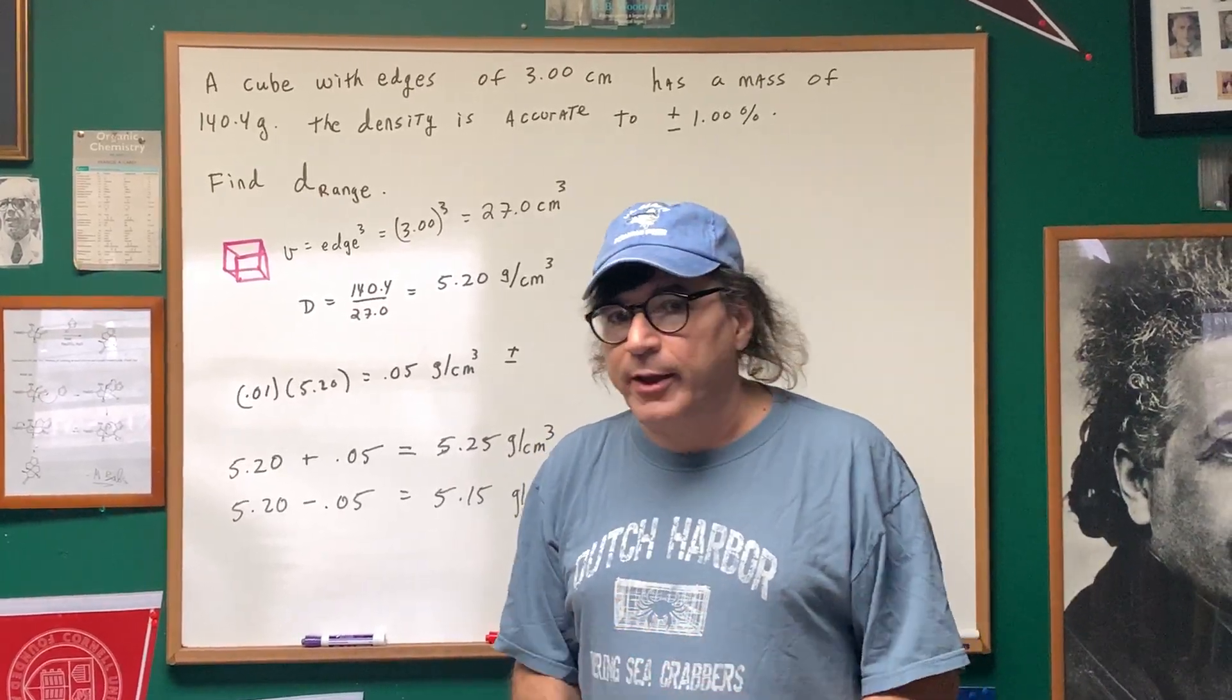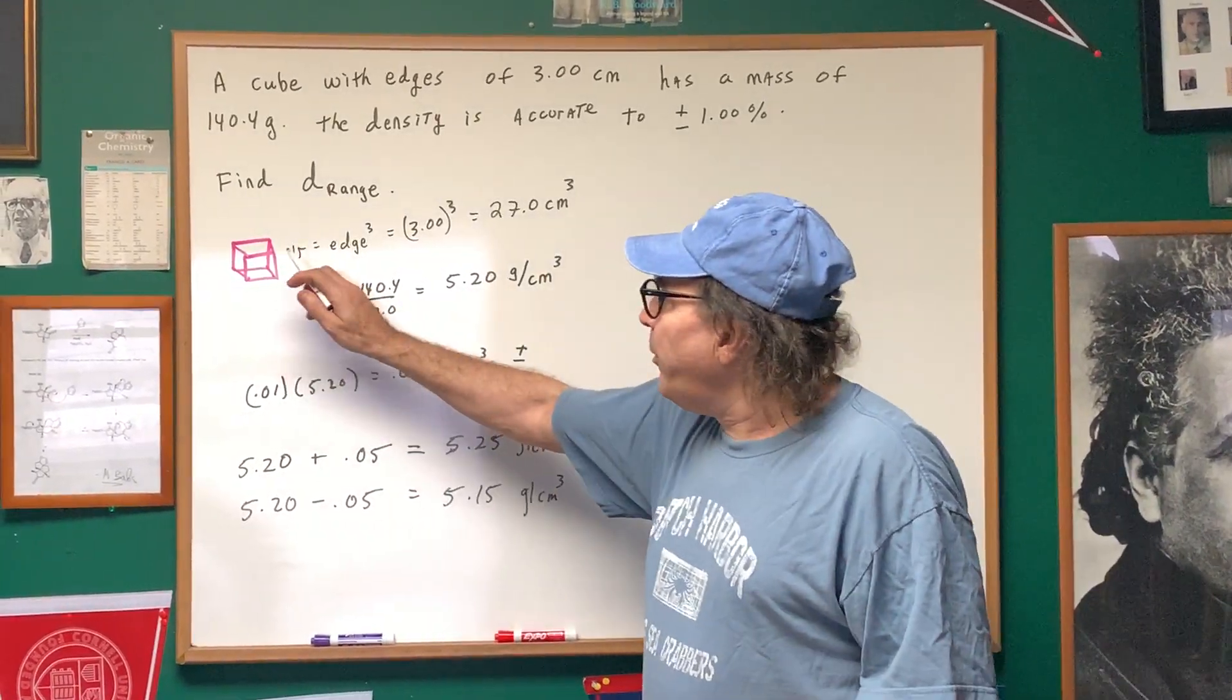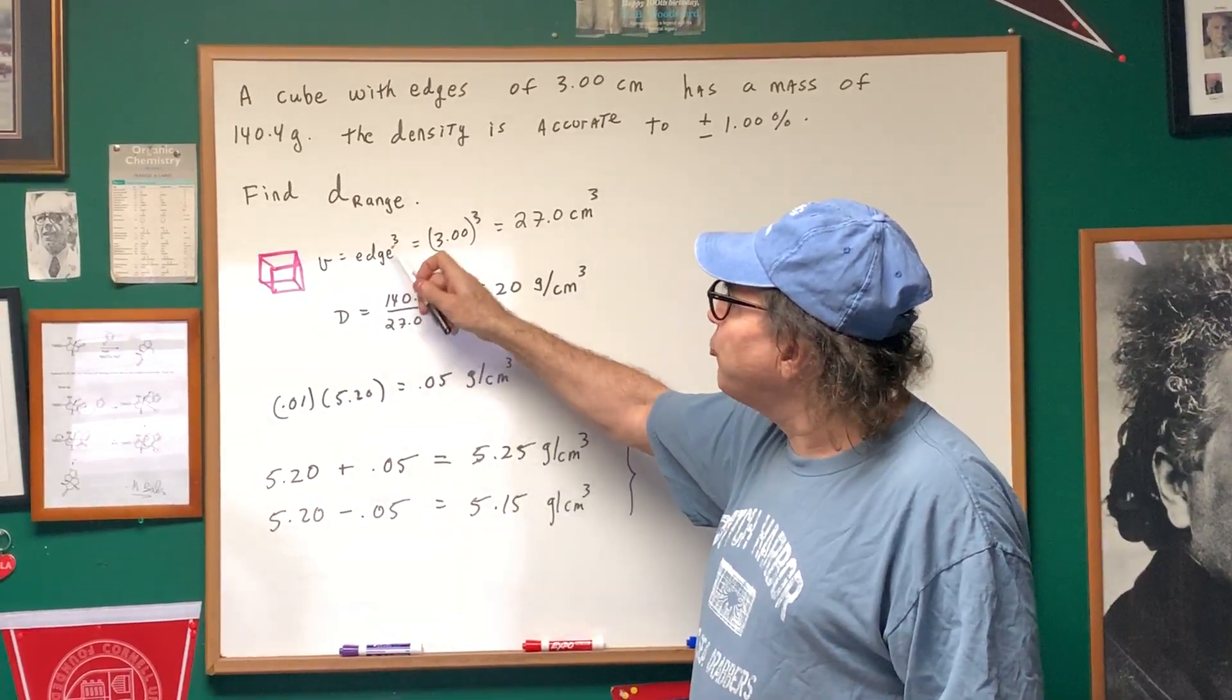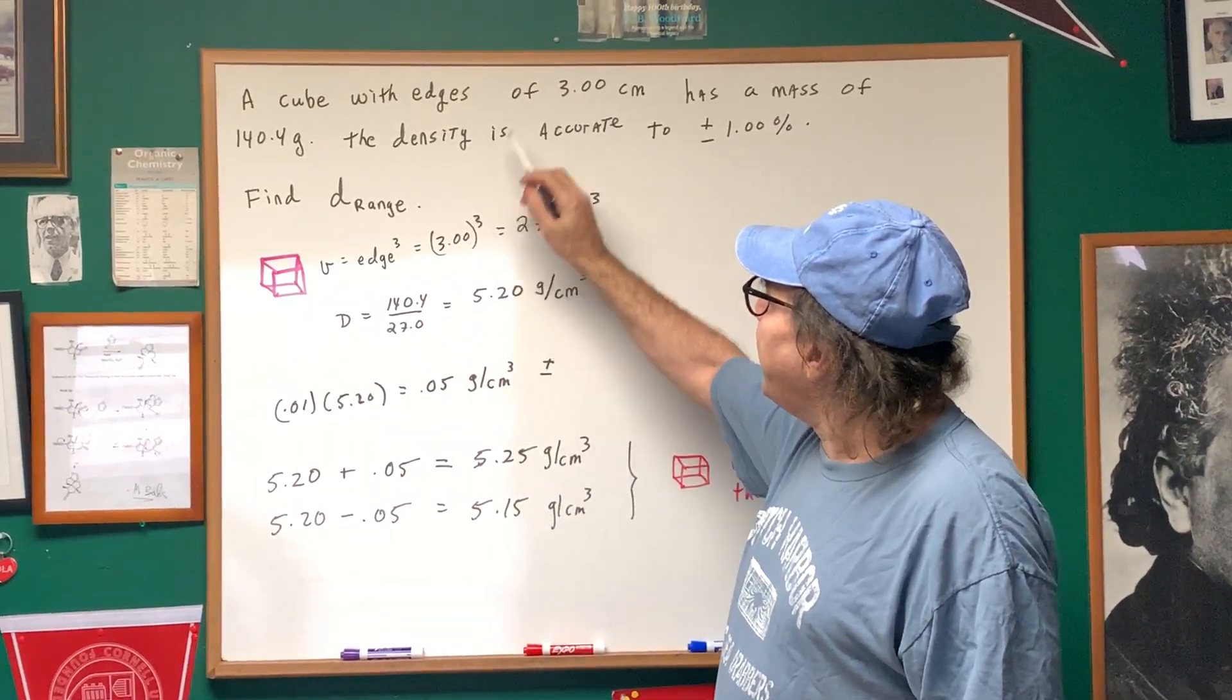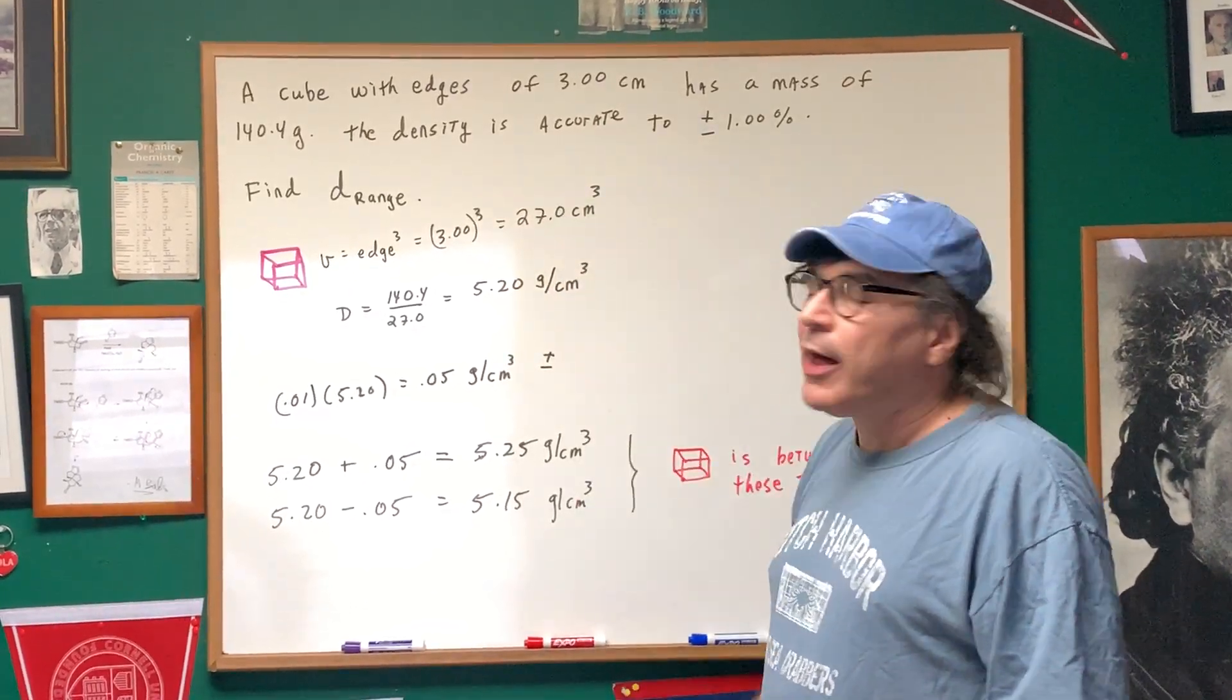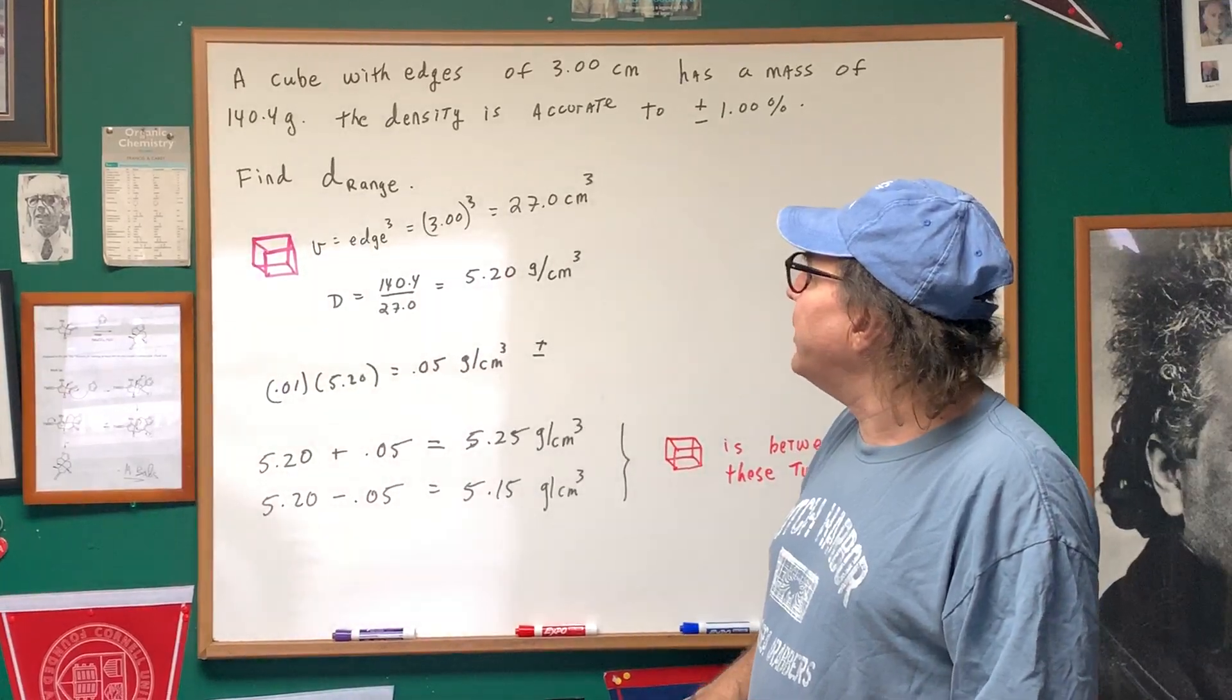Not an easy question. I'll show you how you're going to do it. What we're going to do is we've got to get the volume of the cube, which is edge cubed. So we're going to take the edge length, which is 3, and cube it, and we get the volume is 27 centimeters cubed.